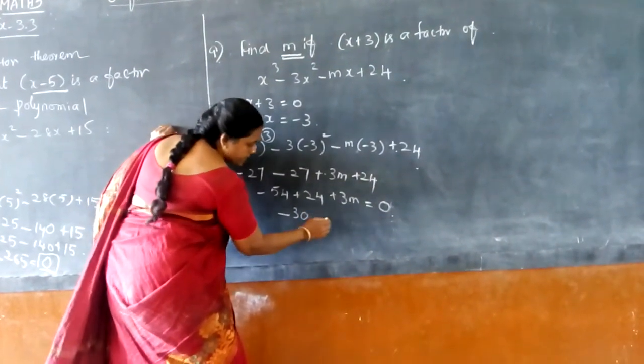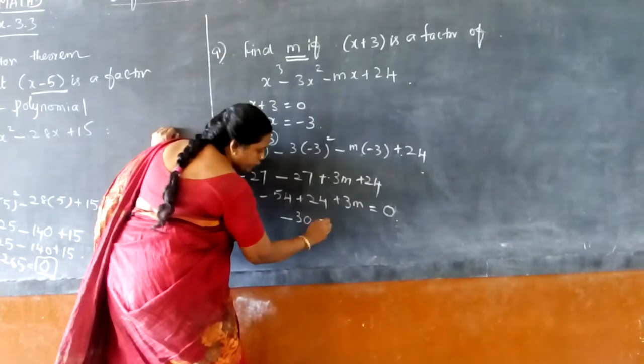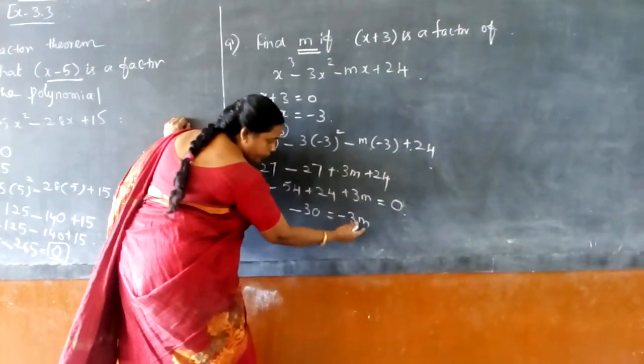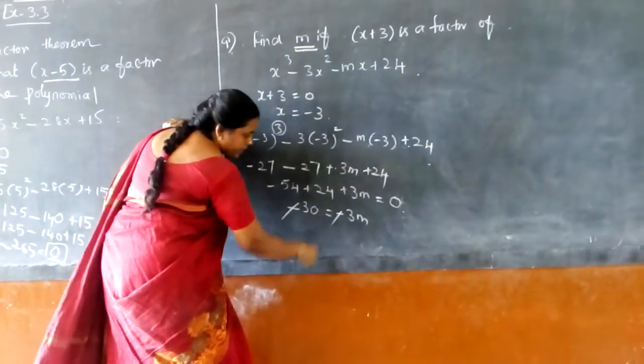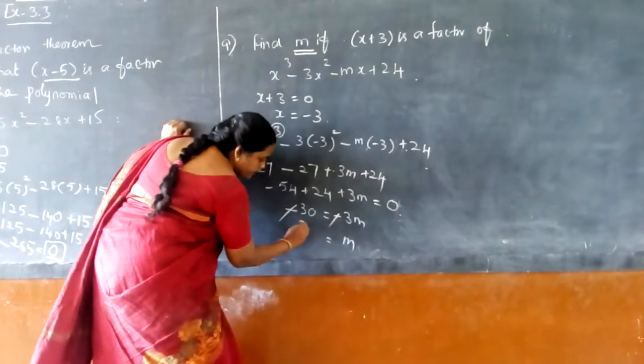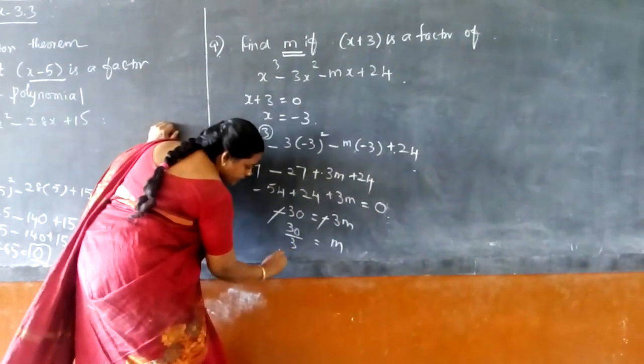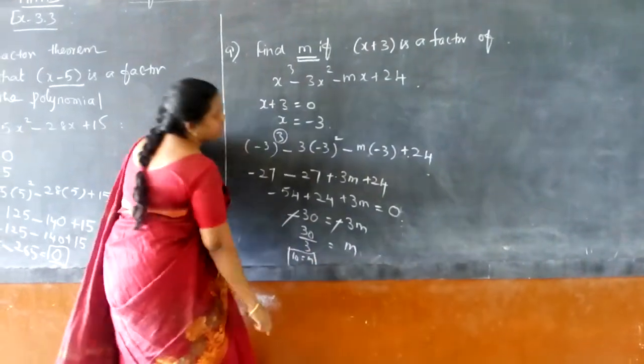Minus 30 plus 3m. So I can take that back to be that side. So minus 3m. If we are going to have 9, it becomes minus. Minus and minus cancel. So what is the value of m? It is 30 by 3, which is nothing but 10. So the value of m is 10.